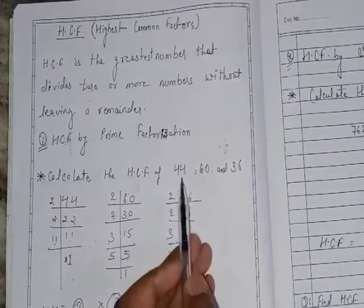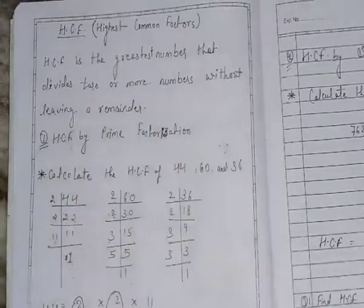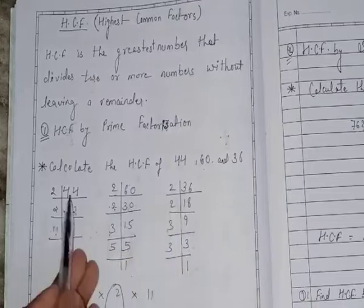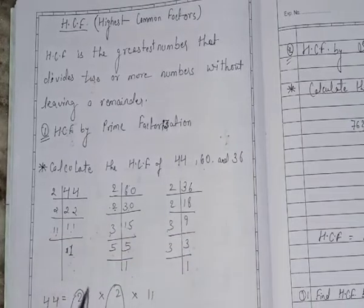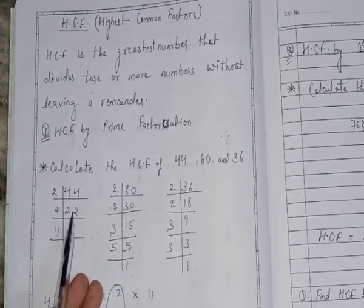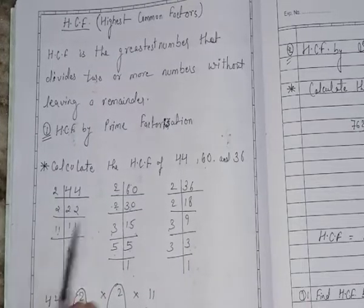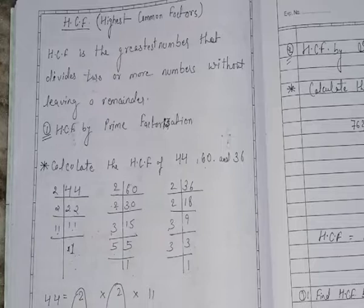For example, if I say find the HCF of 44, 60 and 36 by prime factorization method, what will I do? I will take out the prime factors of all the numbers individually, like 2 times 2 are 44, 2 times 11 are 22, 11 times 1 are 11. Like this, for all, we will find out the factors.